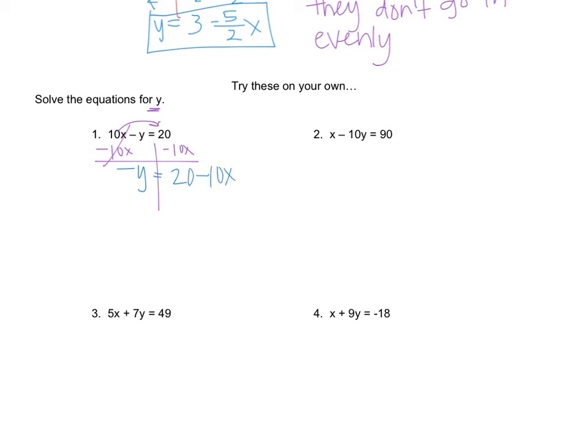Now, the y technically is not by itself because there's a negative sign right here. So squeeze a little 1 in front. And now you have negative 1y. So when we had negative 1 coefficients back in chapter 1, we divided both sides by negative 1. So we're going to do the same thing here.